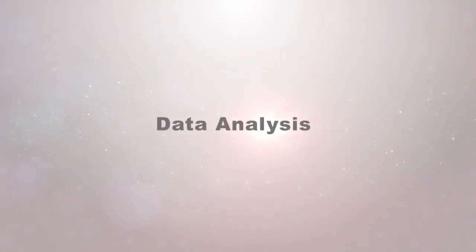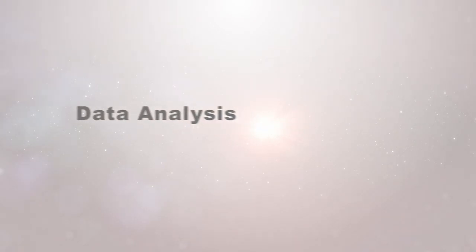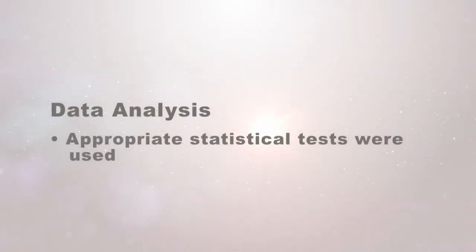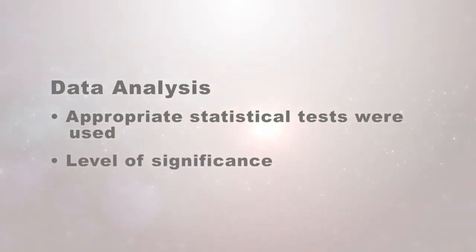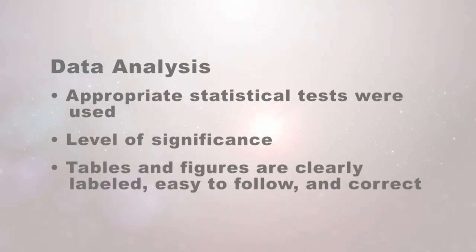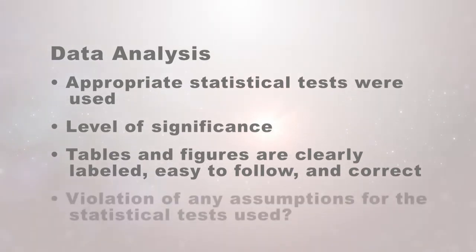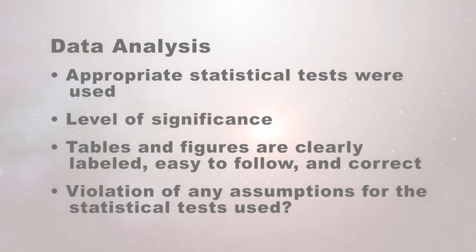Next is the data analysis section. You want to be sure that the appropriate statistical tests were used based on the level of measurement and the variables being studied. The author should have set a level of significance for their study. Each table and figure should be clearly labeled, easy to follow, and accurate. Be sure the researcher has not violated any of the assumptions for the statistical tests they used.